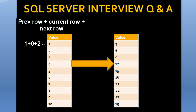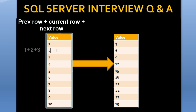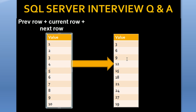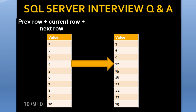Let me explain the logic. For row 1, we take the current value (1), plus the previous value — which doesn't exist so we put 0 — plus the next value (2), giving 1 plus 0 plus 2 equals 3. For row 2, previous value is 1, current is 2, next is 3, giving 6. For row 3: 2 plus 3 plus 4 equals 9. For the last row we have current value 10, previous value 9, and next value is 0 since it doesn't exist, giving 19. So we use previous value plus current value plus next value to get the output.